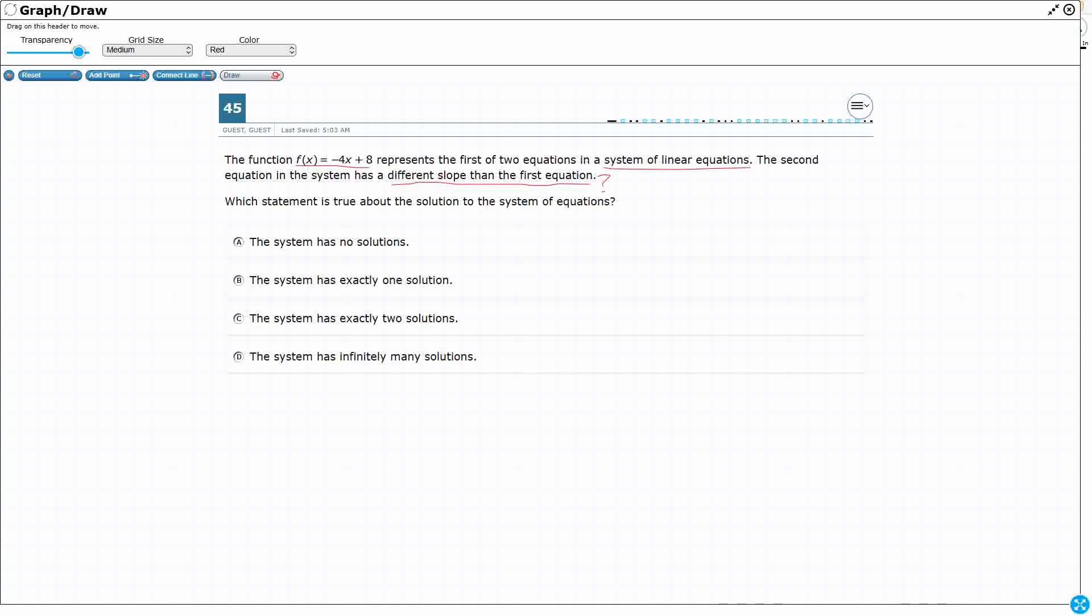Well, let's draw what we know. I know I've got this f(x) = -4x + 8, and this is in my slope-intercept form. So I can actually graph this. Now I'm going to do this on the screen here rather than using the Desmos because I don't know what the other equation is. It would be easier for me just to draw one.